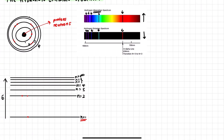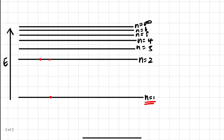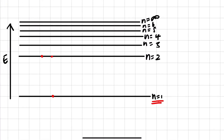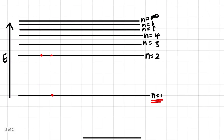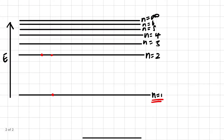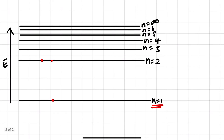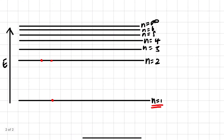Now we can draw the hydrogen emission spectrum. First, you draw the base energy level n equals 1, then all successive energy levels: 2, 3, 4, 5, 6, and the last one being infinity. The energy levels increase in energy as you go up and they become closer together — or we say that they converge.